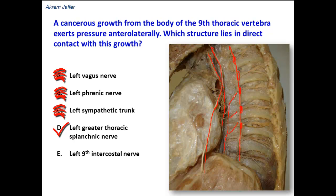The greater splanchnic nerve is formed by branches from the thoracic sympathetic ganglia — from the 5th, 6th, 7th, 8th, and 9th thoracic sympathetic ganglia — and it will definitely cross the body of the 9th thoracic vertebra.